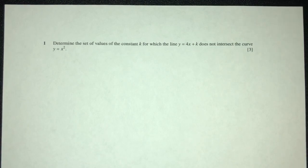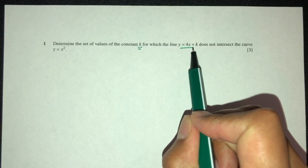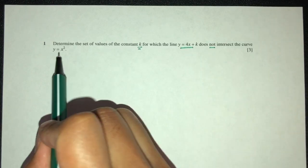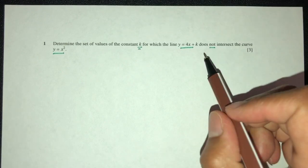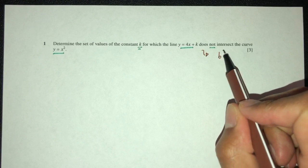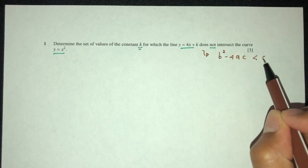So let's see what we have here. We have to find a set of values of k for which the line does not intersect the curve, which means the line and the curve do not have a solution. When we know this, we have to realize this will lead to a question of b² - 4ac have to be less than zero.